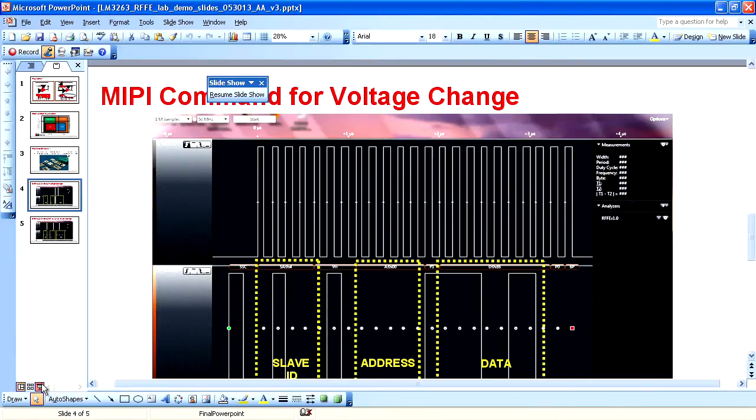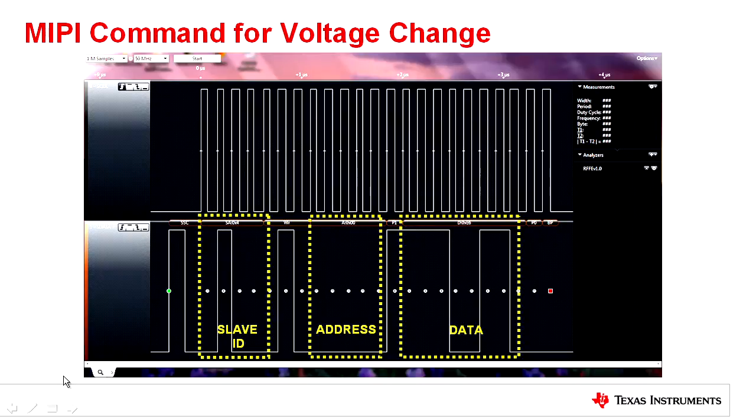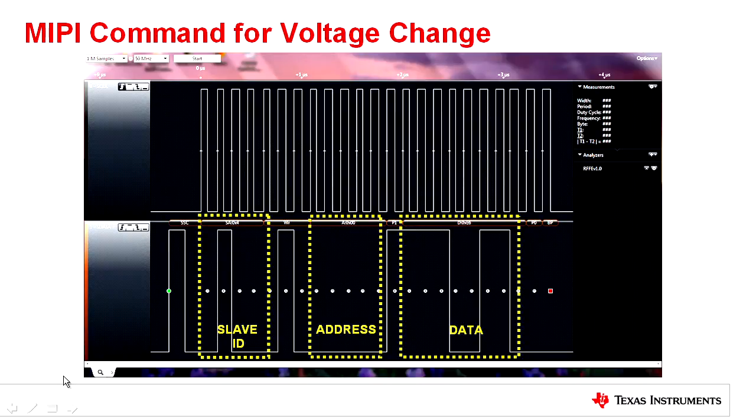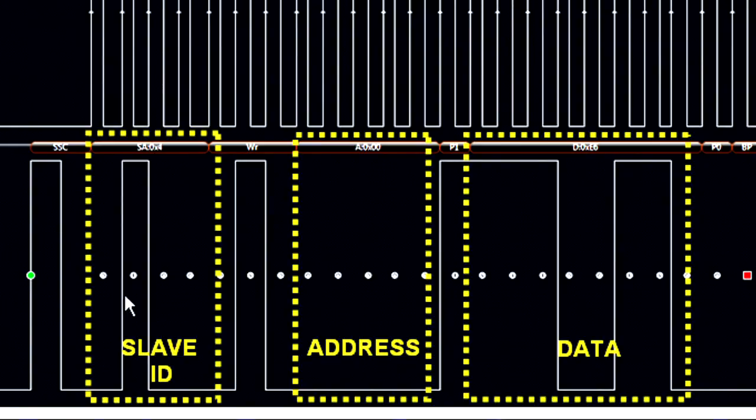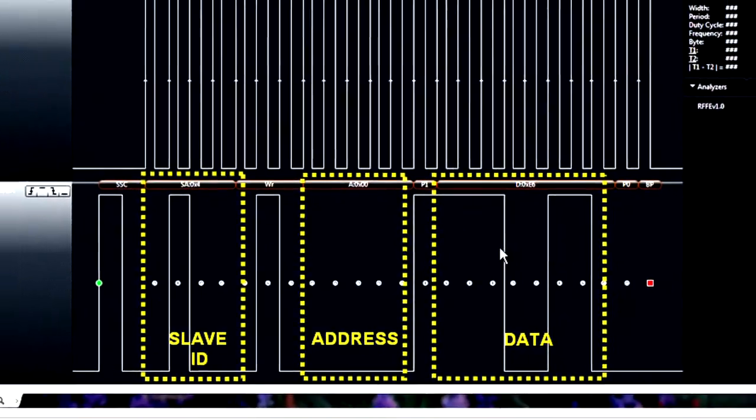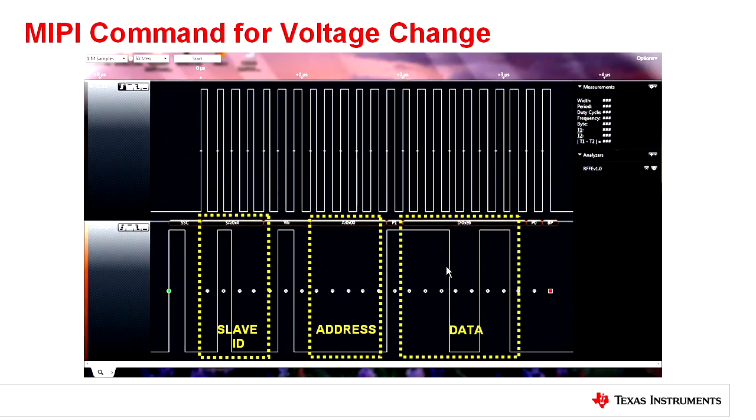What does it mean to send these data? So we have captured the waveforms on the logic analyzers. And here you can see there is a slave ID, address and data. The slave ID identifies the DC to DC converter. The address is the address we are writing to for changing the output voltage. And data is the value for that specific register.